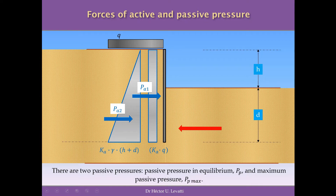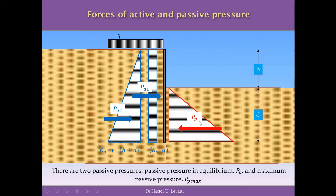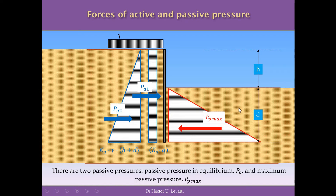Something important to clarify: the passive pressure presented here is the passive pressure in equilibrium. There is also a maximum passive pressure, which is the capacity of the soil on the right side of the wall — the maximum passive pressure the soil can develop to resist the active pressure on the left side. This maximum passive pressure can be determined a priori, with its triangular base equal to Kp times gamma times D, where D is the height from the base of the triangle to the ground surface on the passive side. The passive pressure in equilibrium must be less than this maximum passive pressure.